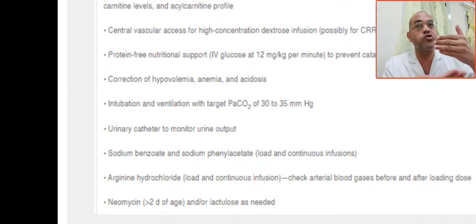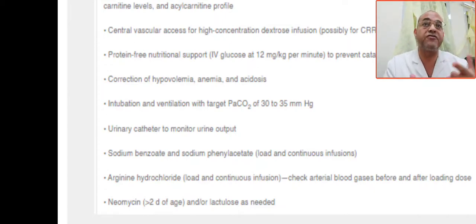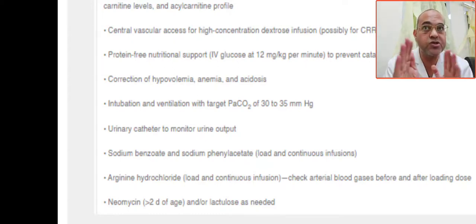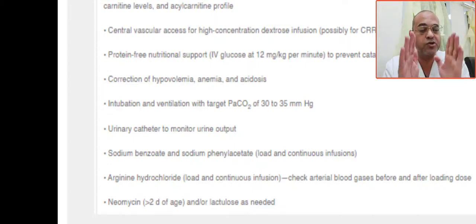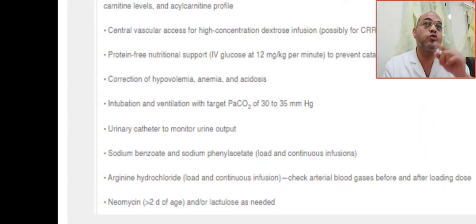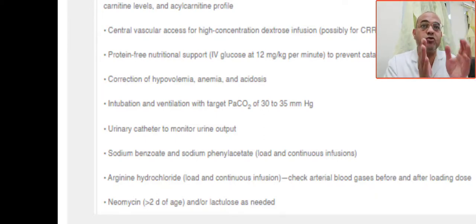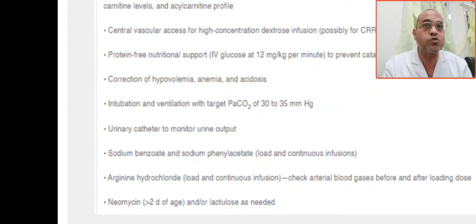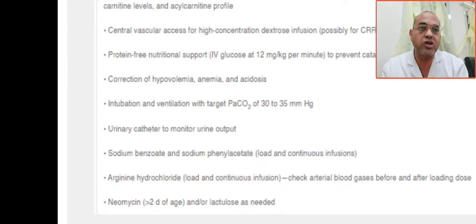Start neomycin at 50 mg/kg/day every six hours, only for babies more than two days of age, and give for 48 hours only. Lactulose: 2.5 ml via NGT or PO three times daily as needed, for two to three days — to decrease intestinal production of ammonia.